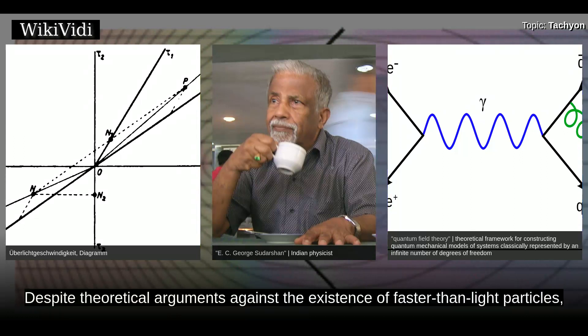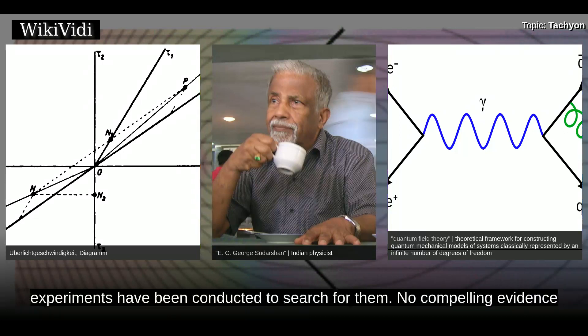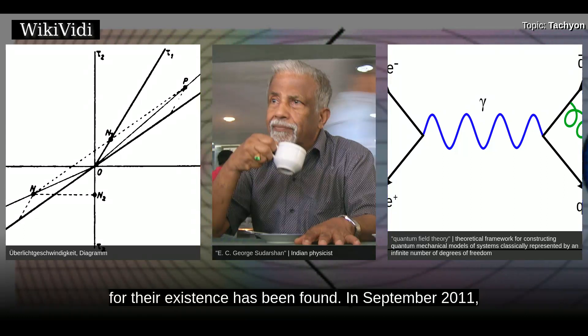Despite theoretical arguments against the existence of faster-than-light particles, experiments have been conducted to search for them. No compelling evidence for their existence has been found.